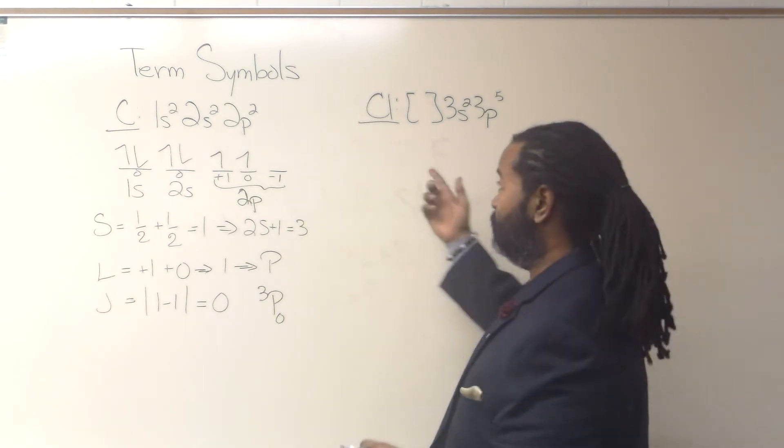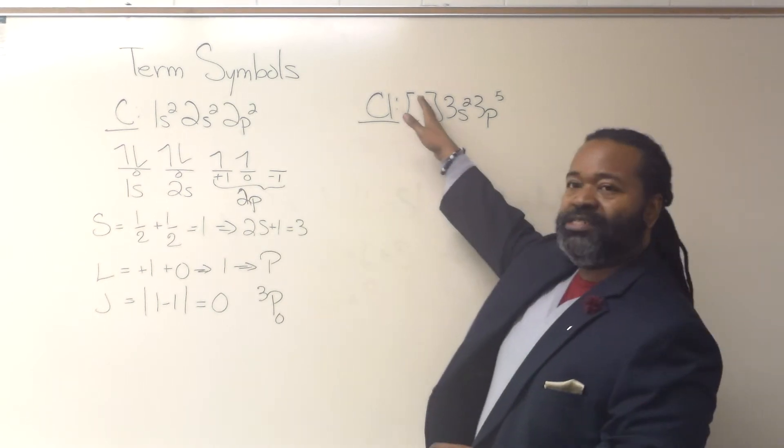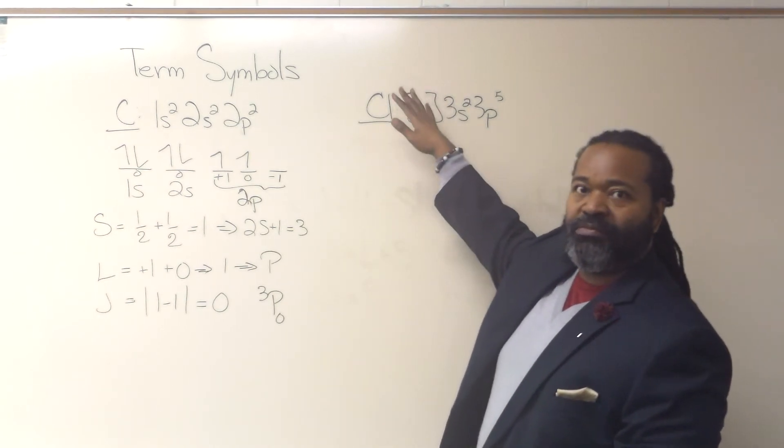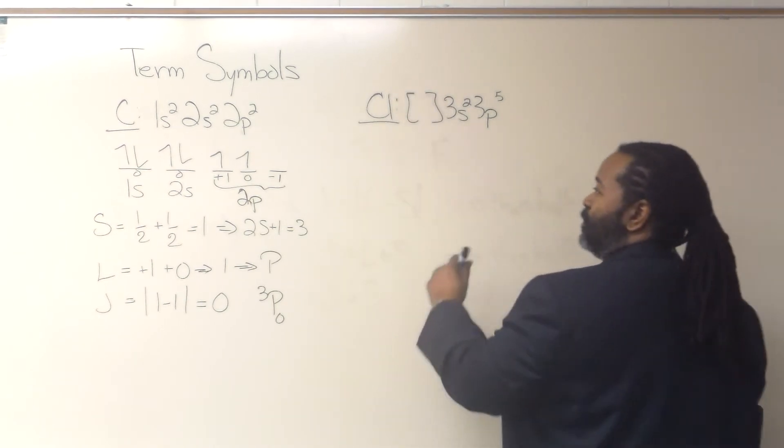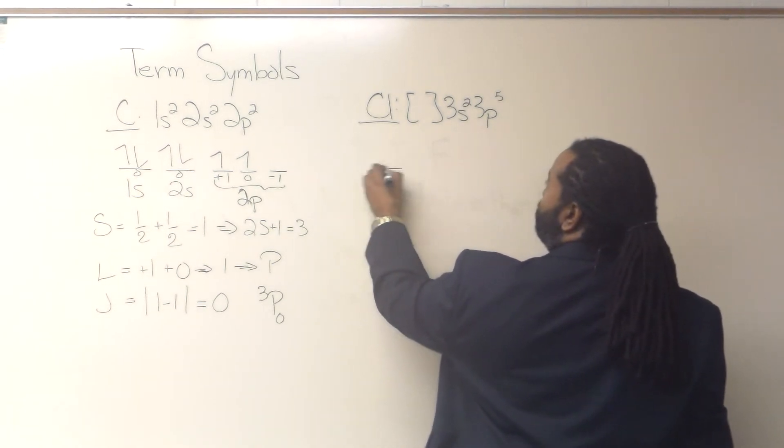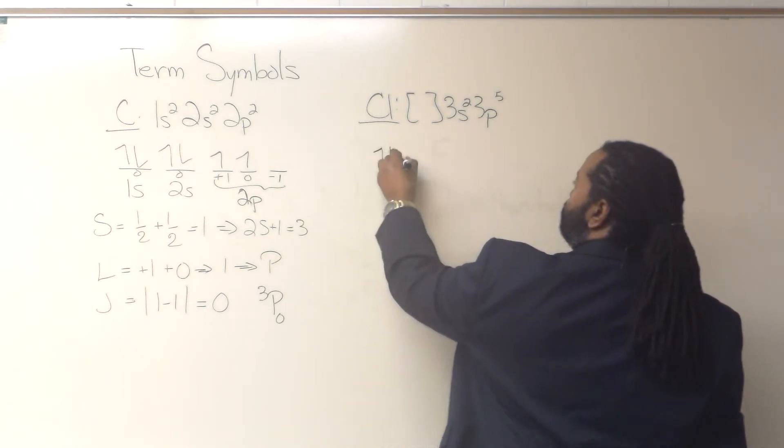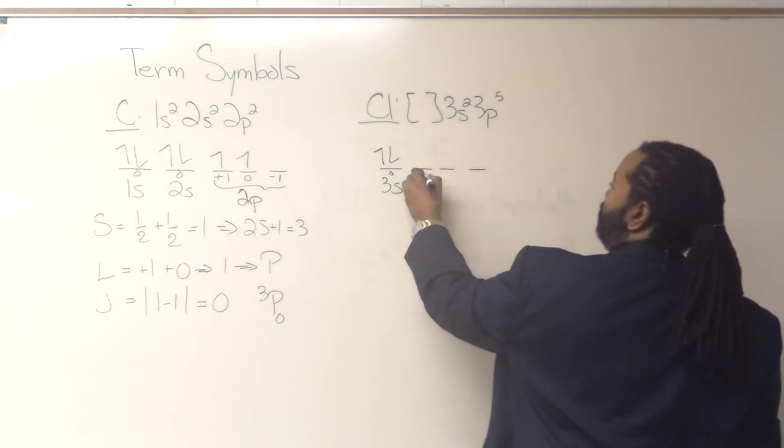So now we can do a ground state term symbol for chlorine. Just for the sake of brevity, I've acknowledged that there is a noble gas core, but that's not important for what we're doing. So 3s 1, 2, 3p has 5.